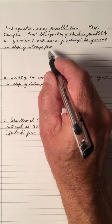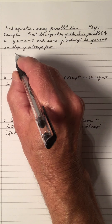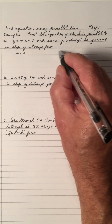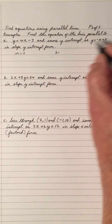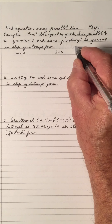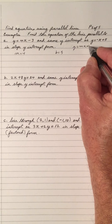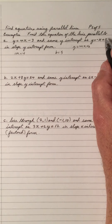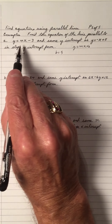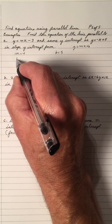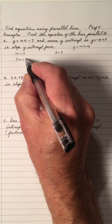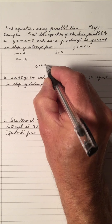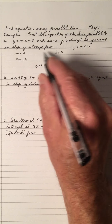Find it in slope y-intercept form. Well, parallel to this line, the slope is 4. The same y-intercept as this line means the y-intercept is going to be plus 5. Both of these are in the form y equals mx plus b, where m is the slope. The slope is 4, the y-intercept is 5. So the parallel line has a slope of 4 because parallel lines have equal slopes. The new equation is y equals 4x plus 5 — a combination of these two.